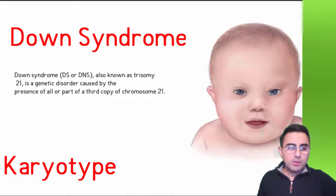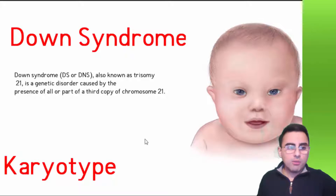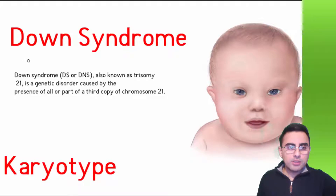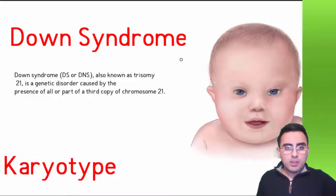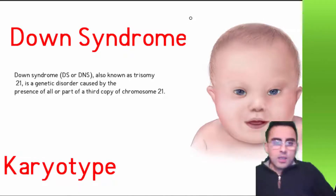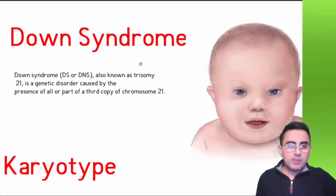Hello everyone, today we're going to talk about Down syndrome. Down syndrome is the most common genetic disorder and it is now preventable. In developed countries, the Down syndrome birth rate is very low because most parents prefer abortion rather than birth a child with Down syndrome.